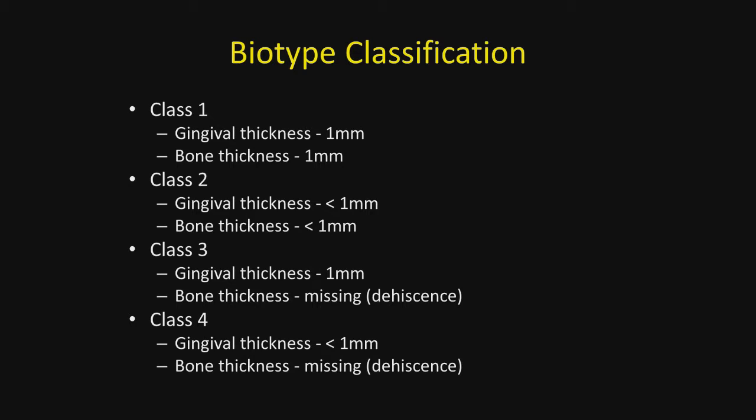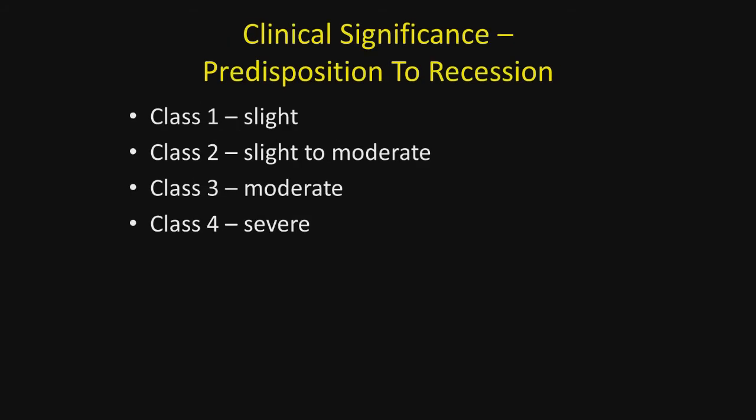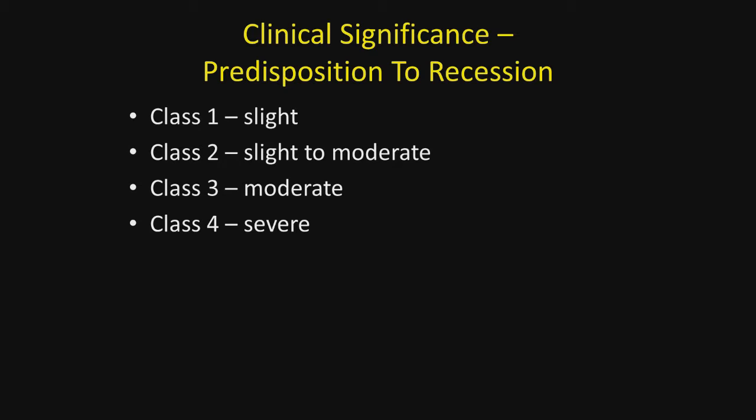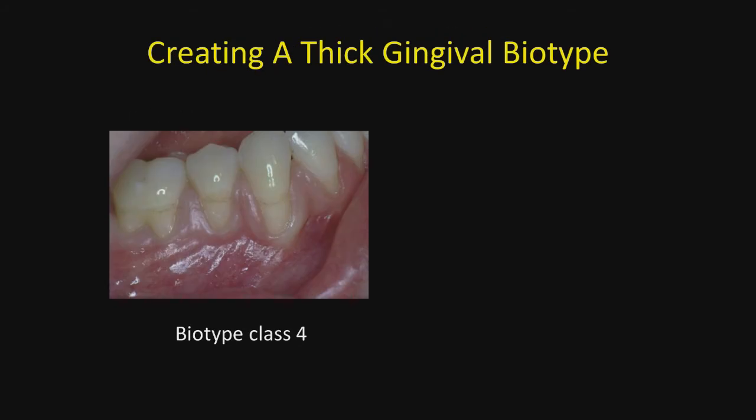Class four would be what we refer to as the washboard looking effect, even if recession is not present. The clinical significance and predisposition to recession: class one is slight, class two is slight to moderate, class three is moderate, and class four would be severe.